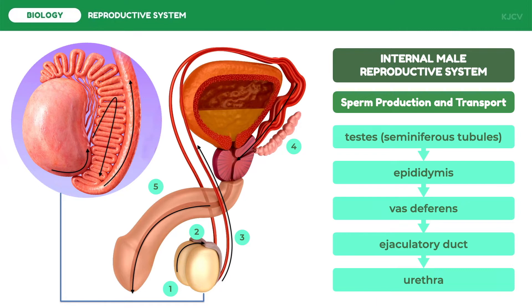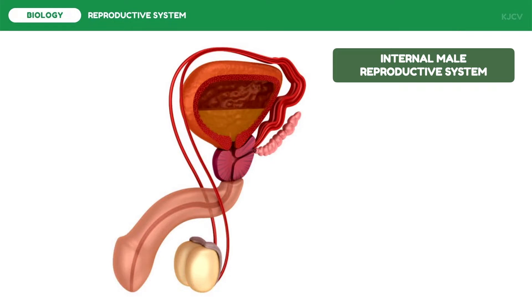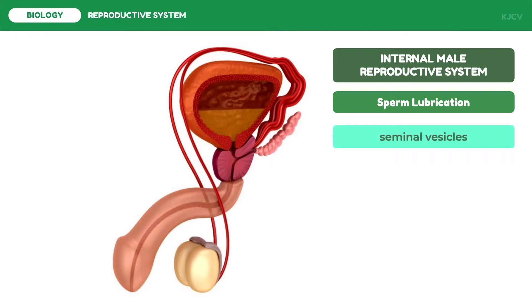Let us discuss the components of the seminal fluid and the organs which produce semen. Semen is used for sperm lubrication. First, the seminal vesicles produce a fructose-rich fluid that provides sperm with energy, since the sperm cells will be expending a lot of energy to reach the egg cell. This organ also produces prostaglandins which contribute to the motility and viability of the sperm, and proteins that cause slight coagulation reactions in the semen after ejaculation.